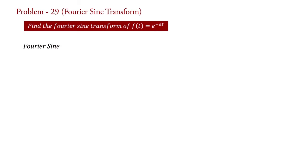The formula of Fourier sine transform is: Fs(omega) equal to square root of 2 upon pi, integral 0 to infinity, f(t) sine(omega t) dt.